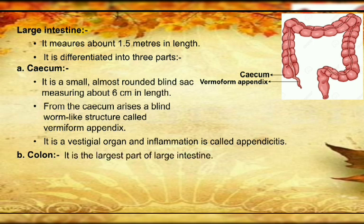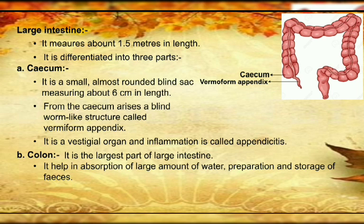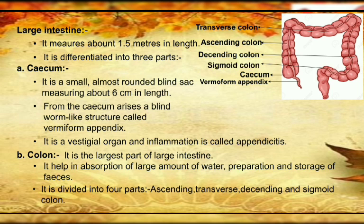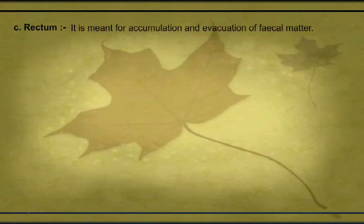Next is the colon — the largest part of the large intestine. It helps in the absorption of maximum water and storage of feces and waste material. It is divided into four parts: ascending colon, transverse colon, descending colon, and sigmoid colon. Next we discuss the rectum — where waste material is collected — and the anus — where waste material is removed from the body.